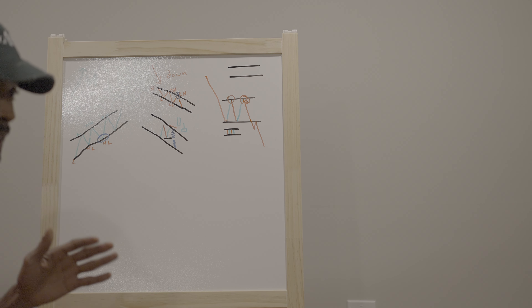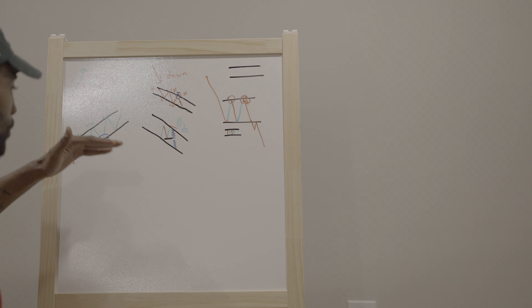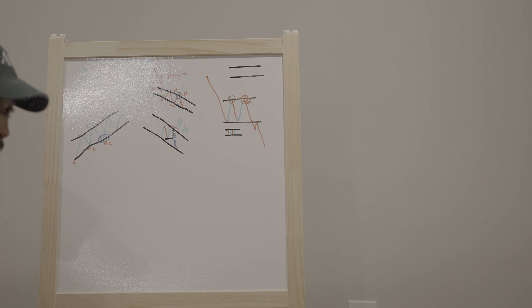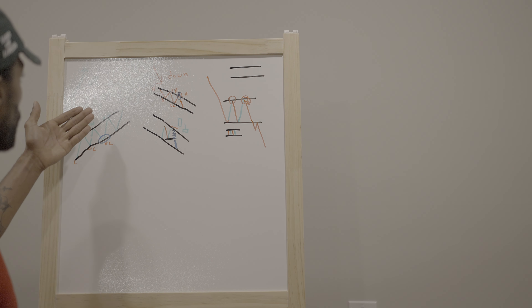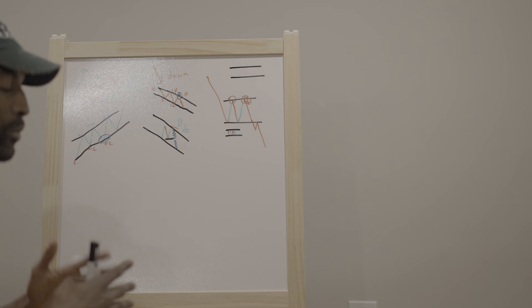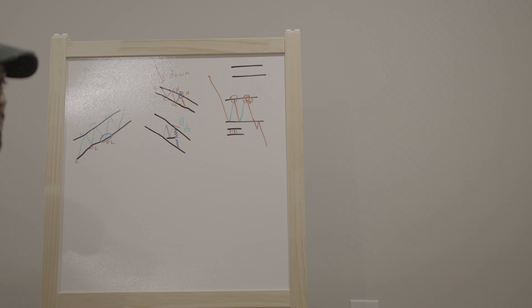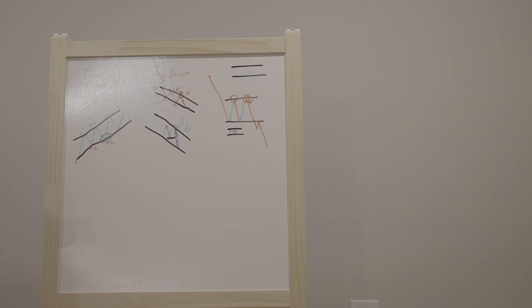Now, so you know levels — you know structure, right? Levels, key levels: where price is turning back, where price is getting support. The structure — what's going on in the market? Are they going up? Are they going down? Are they not really doing anything? Trading range.